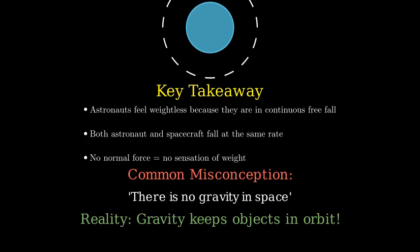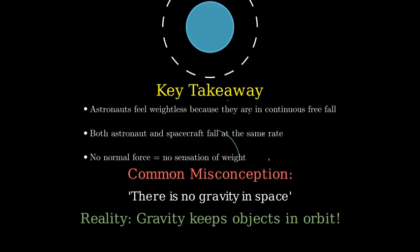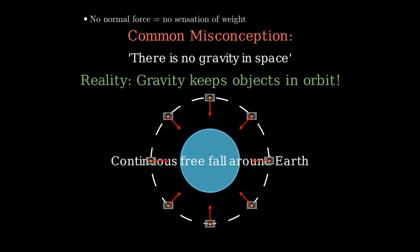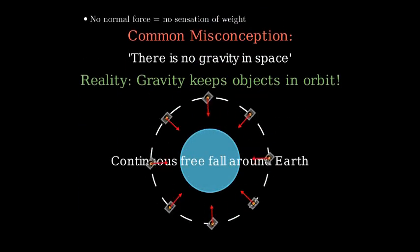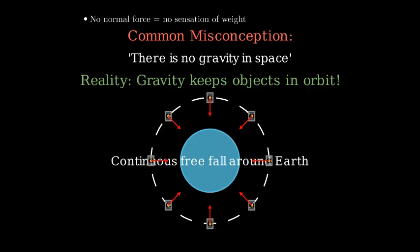And it's precisely gravity that keeps the astronauts and their spacecraft in orbit. So the next time you see astronauts floating inside the International Space Station, remember, they're not floating because there's no gravity, they're floating because they're falling around Earth, along with their spacecraft, in an endless free fall we call orbit.